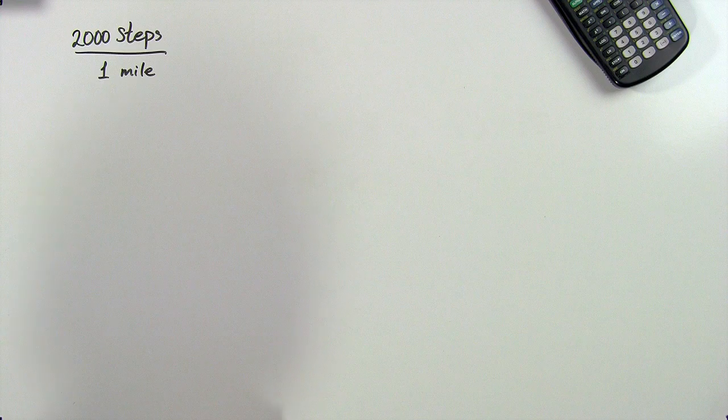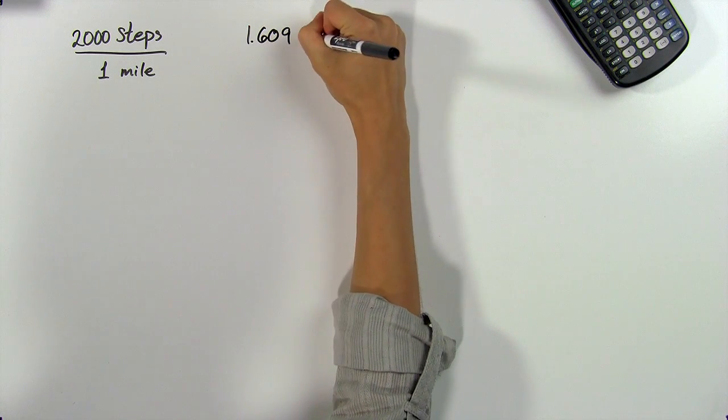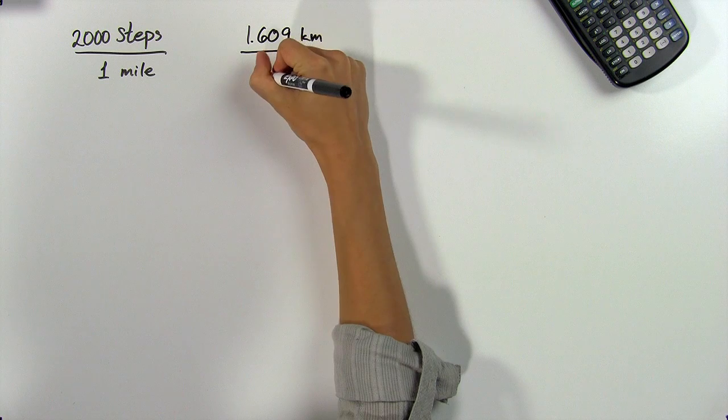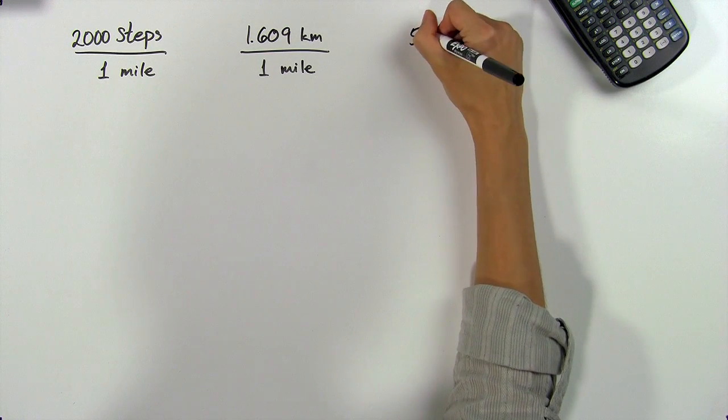Next, we'll need the conversion factor from miles to kilometers. There are 1.609 kilometers per 1 mile. Our last conversion factor is from kilometers to calories burned, and this is the hardest one to define, because not only does it depend on the speed you're walking or running with, but it also depends on the physical build of your body. For this example, we'll just use the average amount of calories a man burns when walking, which is about 55 calories per kilometer.